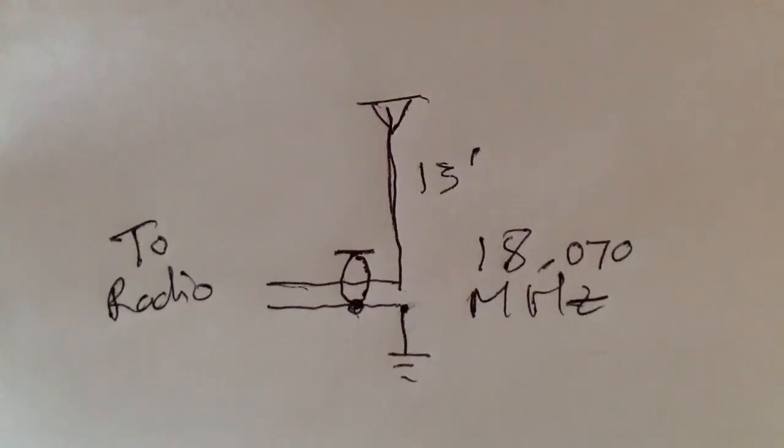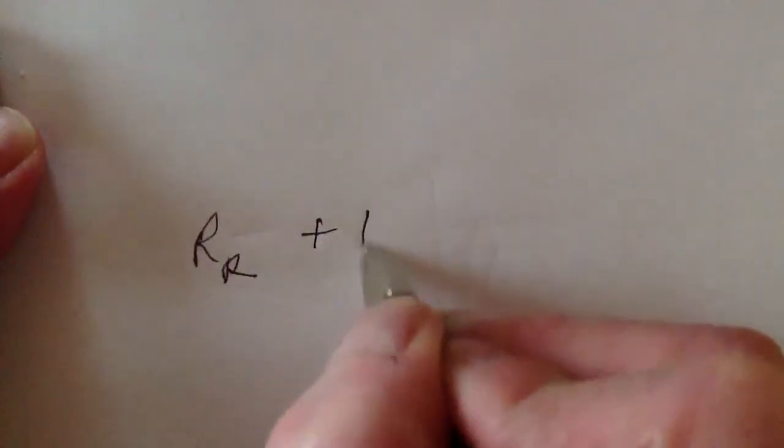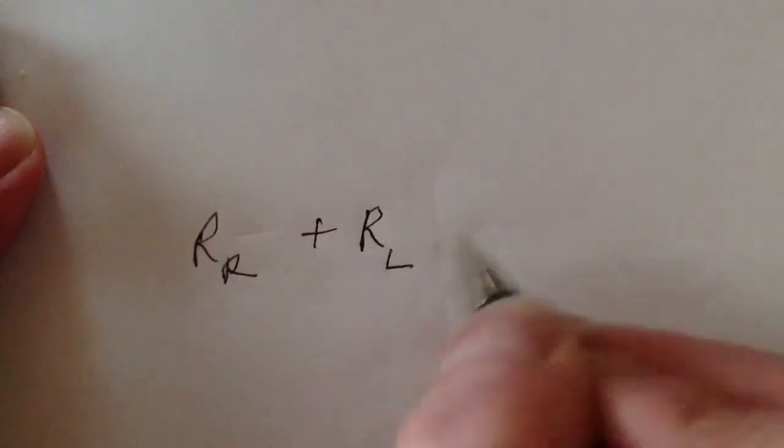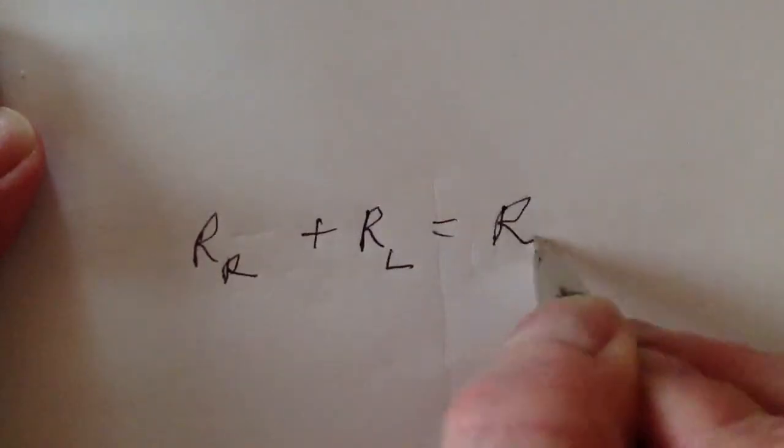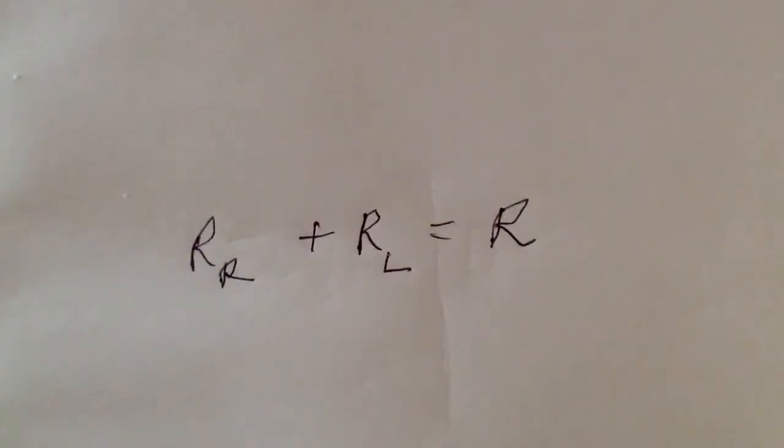Now, the question is, what is the efficiency of an antenna like this? Well, when you have an antenna like this, you have radiation resistance in series with a loss resistance to give you the resistance of the entire system.